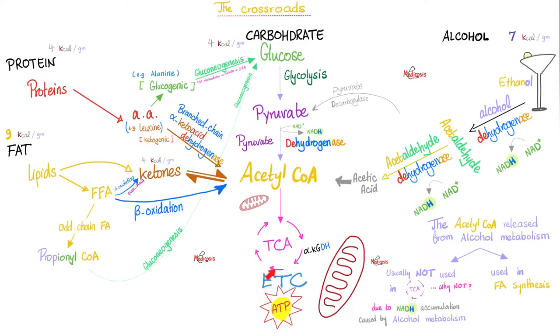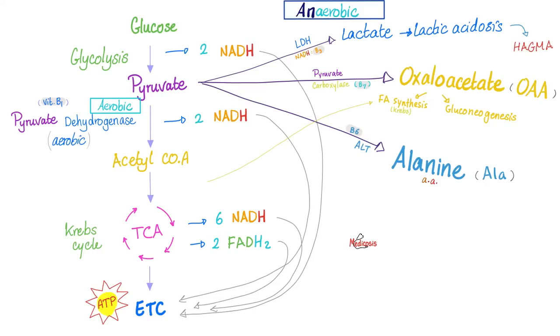Which means less energy. What's the organ of the body that needs lots of energy? The nervous system — brain, spinal cord, neurons, etc. That's why many of these patients have neurological symptoms.